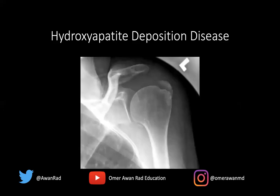Moving on to hydroxyapatite deposition disease, also known as calcific tendinitis. This typically occurs in patients between 40 and 60 years of age — usually middle-aged individuals. Females are a little bit more commonly involved than males, particularly in the shoulder, which is the most common joint involved, usually resulting in chronic pain. The second most common place would be around the hips, where the gluteal tendons insert onto the greater trochanter. Hydroxyapatite calcification gets deposited around joints — in tendons, ligaments, and bursae.